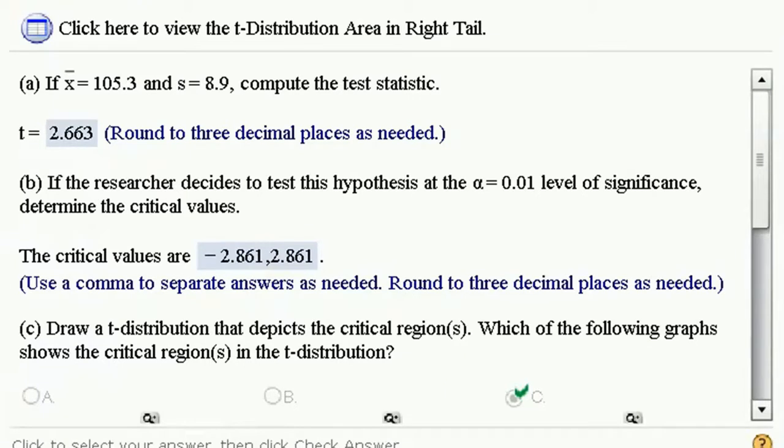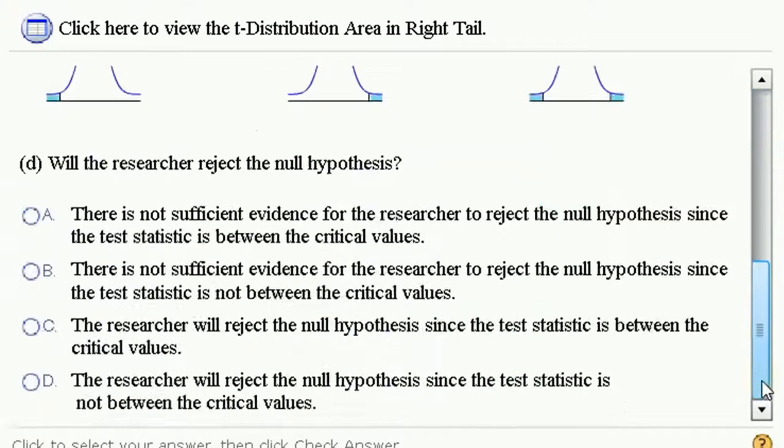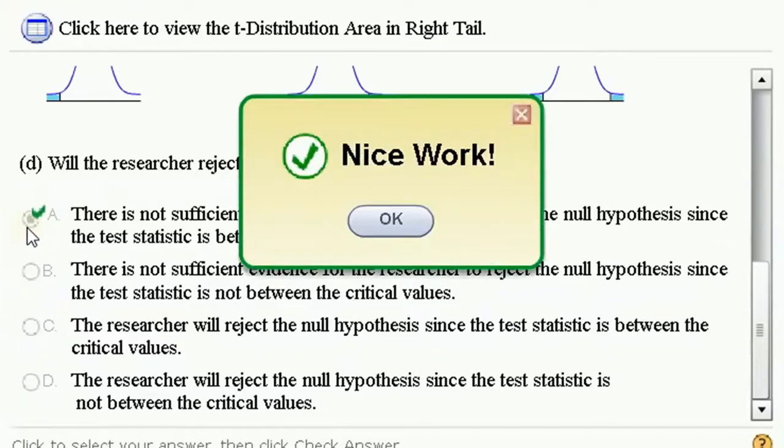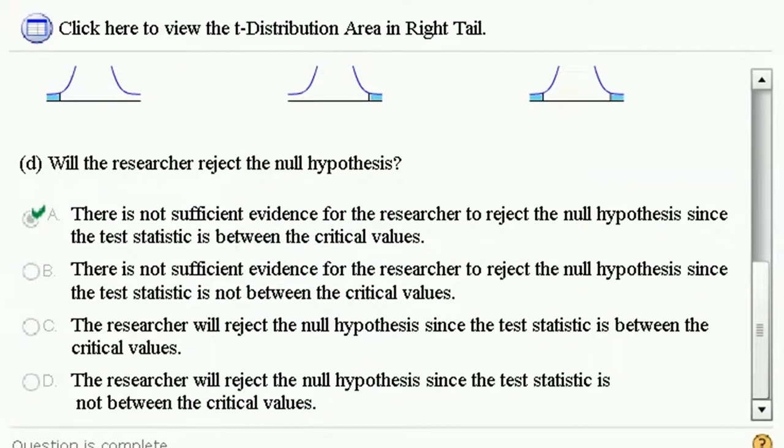This is between those two cutoffs. It would be in the red on this graph over here, which is the do not reject region. So there is not sufficient evidence to reject the null, since the test statistic is between the critical values. There we go.